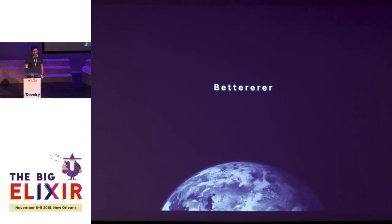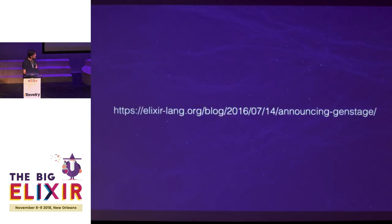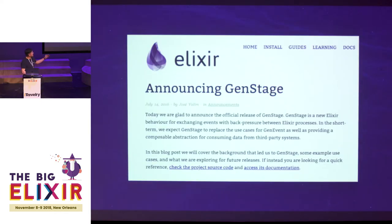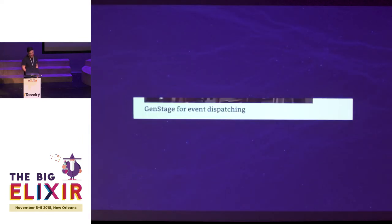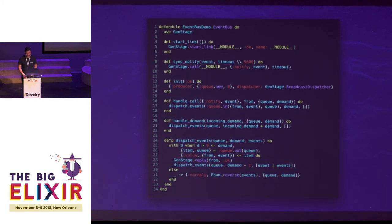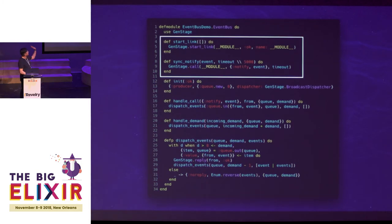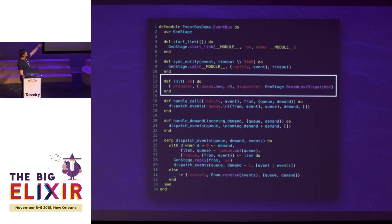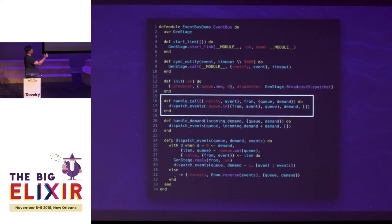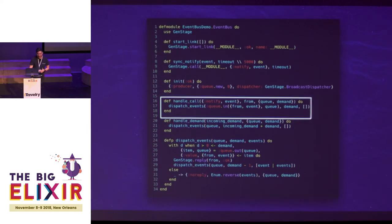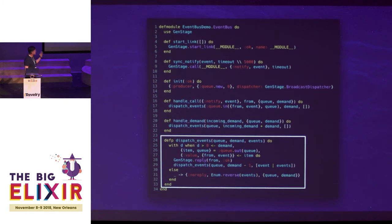There's a better way. You do this by going to the blog post announcing GenStage. If you don't know what GenStage is, it's a behavior for exchanging events with back pressure between Elixir processes — exactly what we want for not overloading consumers. For our GenStage event bus, in the init we declare it as a producer, initialize it with an empty queue, and set a broadcast dispatcher so all events go to all consumers. Notify puts events into the queue. Handle demand pops whatever demand it gets from the queue and passes it along.